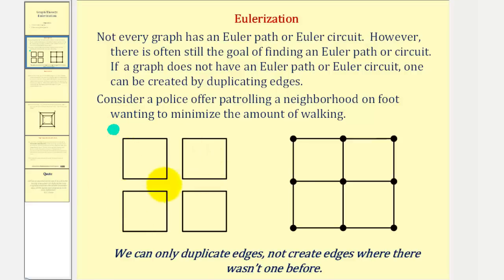We can represent this neighborhood using this graph here. In order for an Euler circuit to exist, the degree of each vertex must be even. Let's begin by determining the degree of each vertex. Notice how these vertices all have degree two.